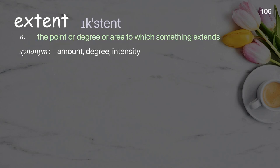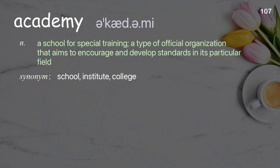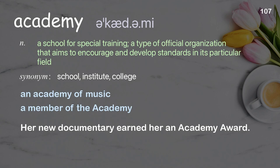Extent: the point, degree, or area to which something extends. Academy: an institution for higher learning or research, especially in its particular field. Examples: an academy of music; a member of the academy. Her new documentary earned her an academy award.